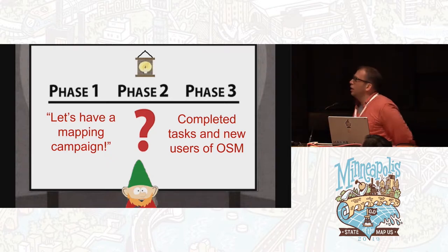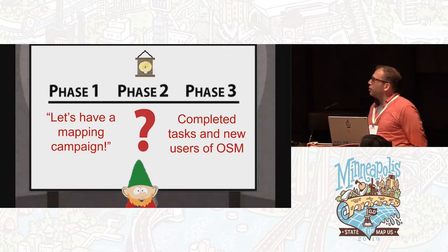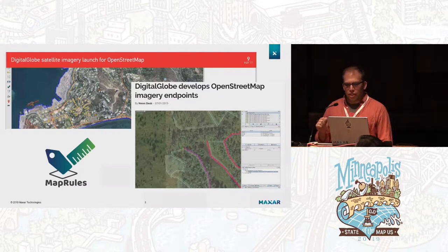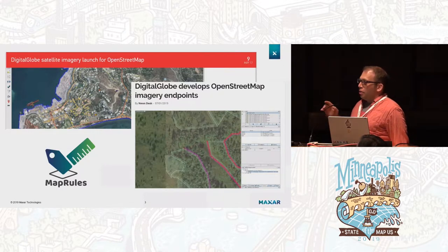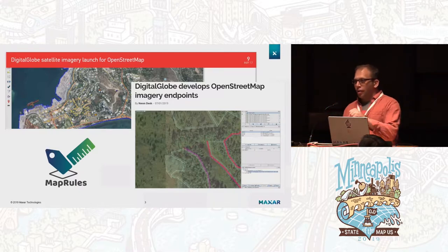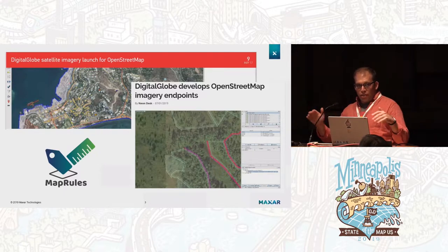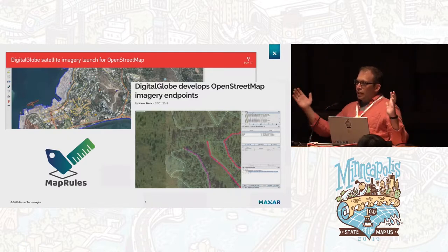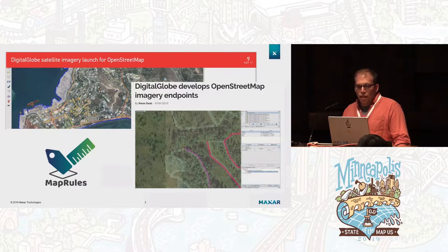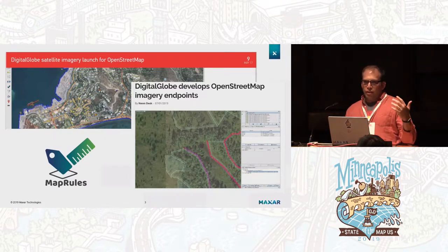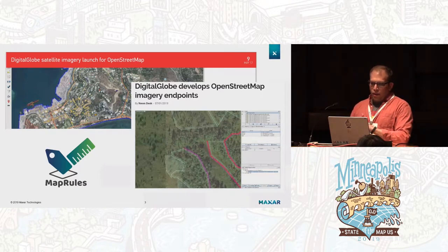I'm from Maxar. We had this great idea: run a mapping campaign, get completed tasks and new users of OSM. You may know a company that used to be called Digital Globe — we are now Maxar. We're one of the leading suppliers of commercial satellite imagery, and we provide a lot of that back to OpenStreetMap, as well as something called Map Rules, which is being provided as an open source tool plugged into OpenStreetMap. As a company, we're very involved and ingrained in the OSM ecosystem.